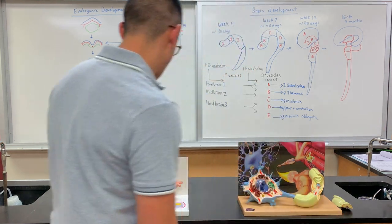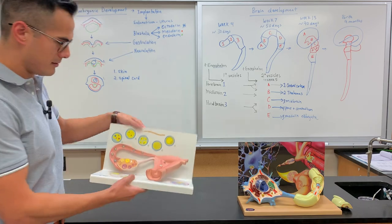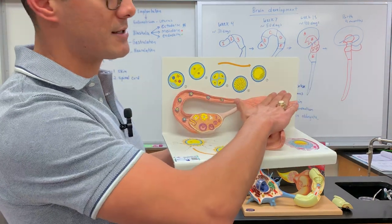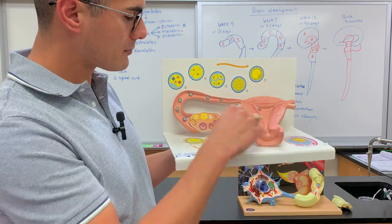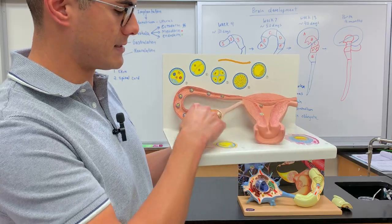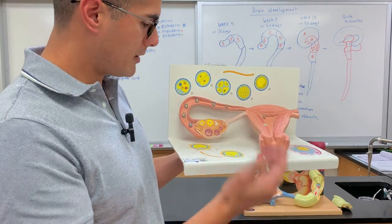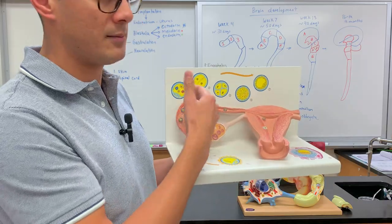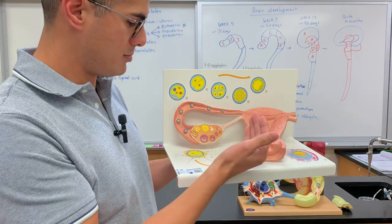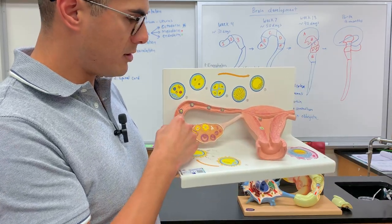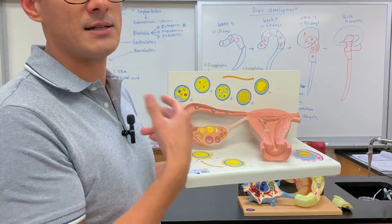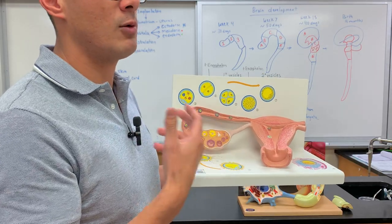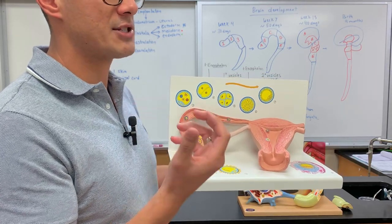So the model I have up here in front — this is showing the uterus and the ovary. So when a woman ovulates, the egg travels here within the fallopian tube. And if a sperm fertilizes this egg, we get the development of what we know as a blastula.